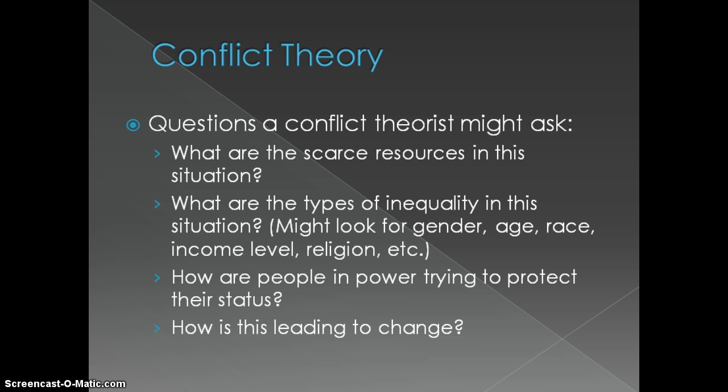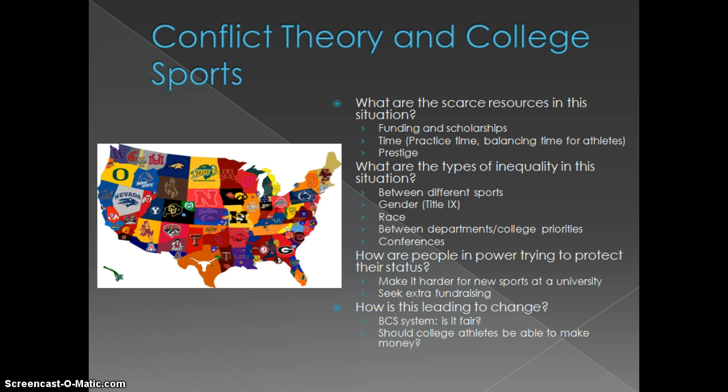You'd look at how people in power — those with money, space, or prestige — are trying to protect and hold on to that. Conflict theorists are also really interested in change. Where a functional theorist focuses on stability, conflict theorists focus on change. So let's apply that to college sports.